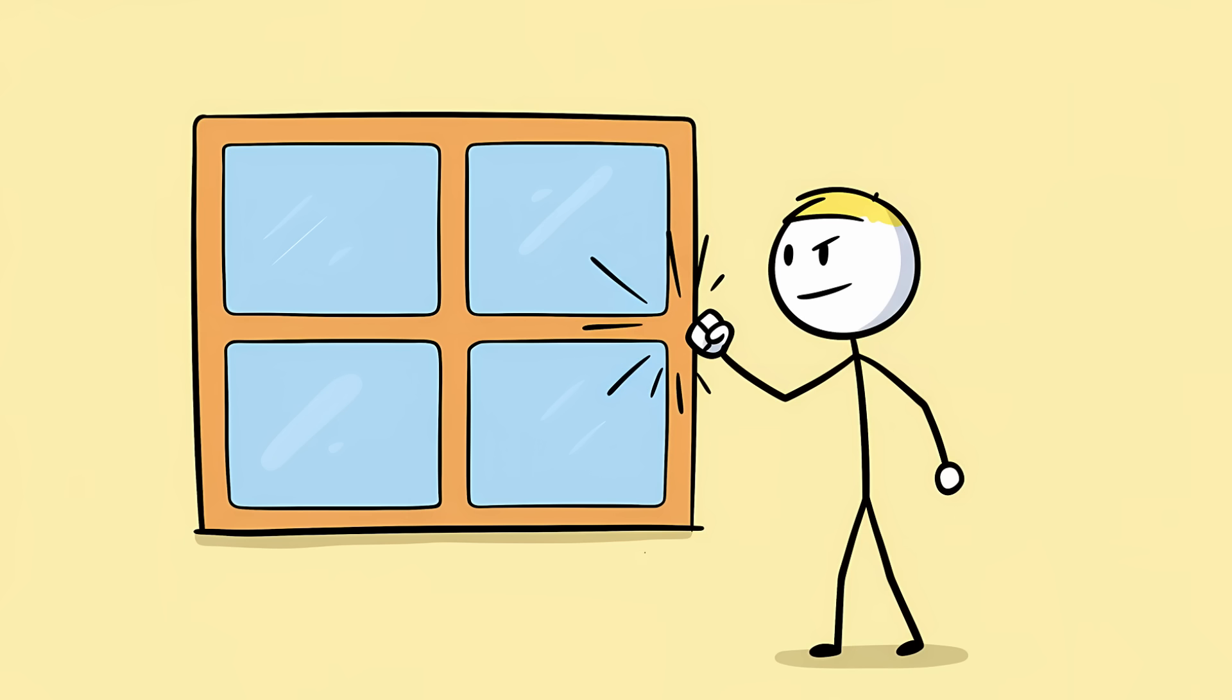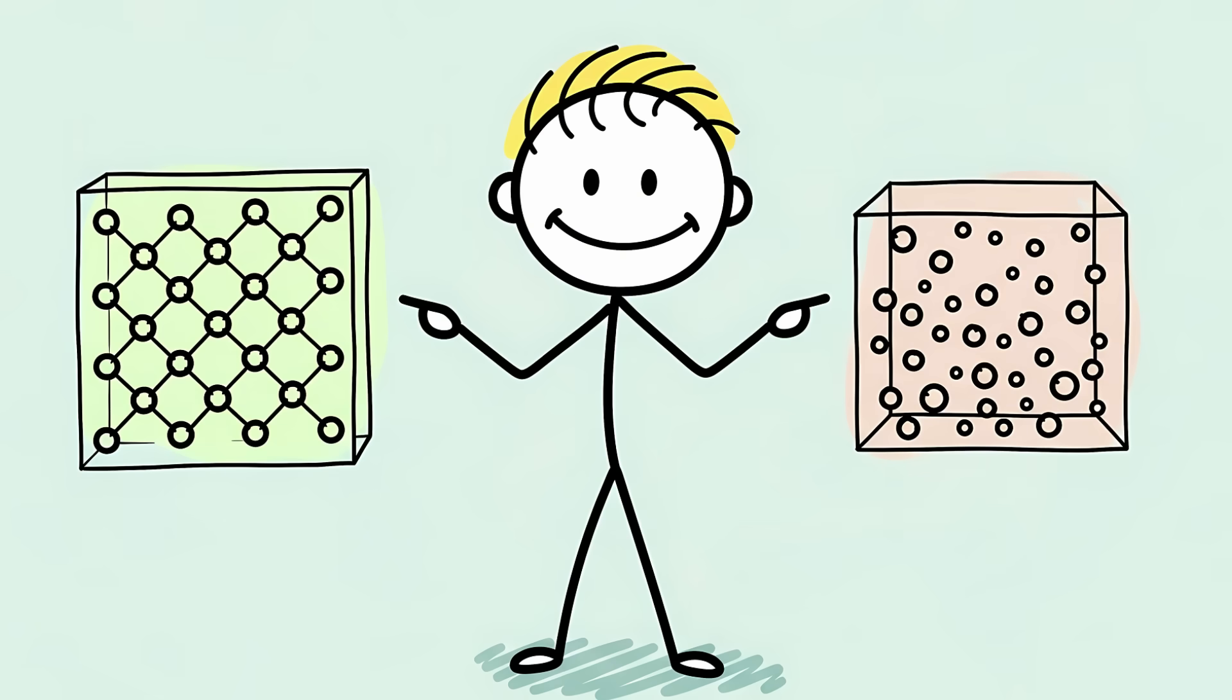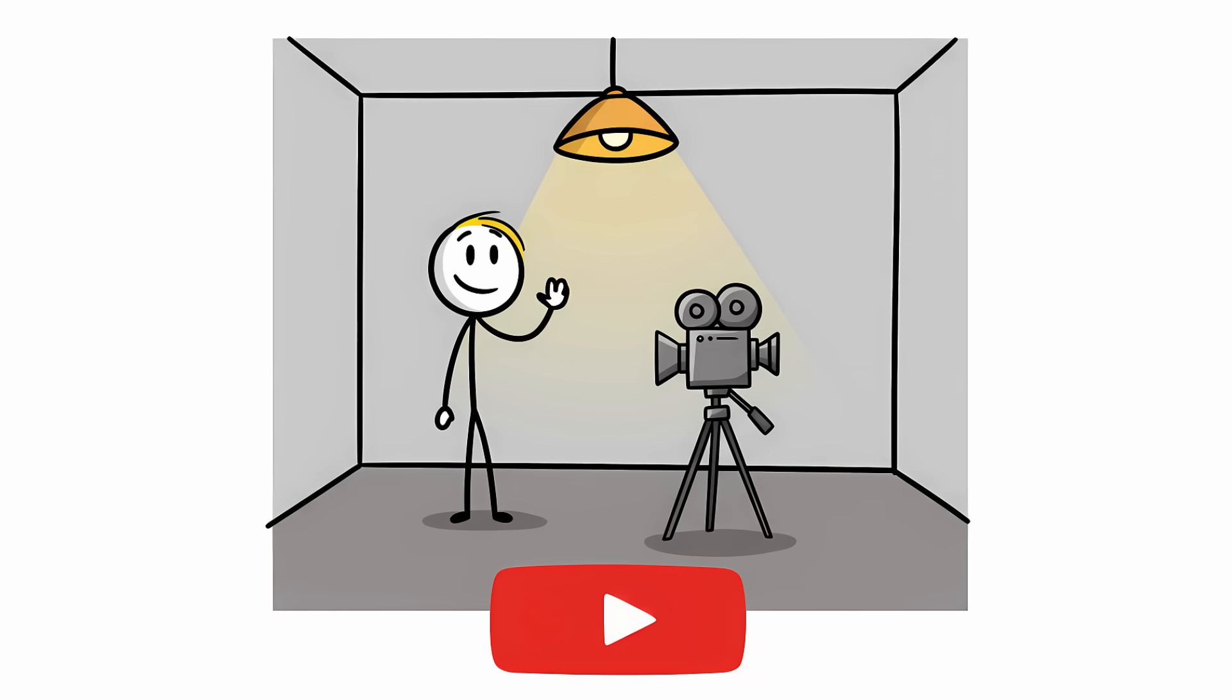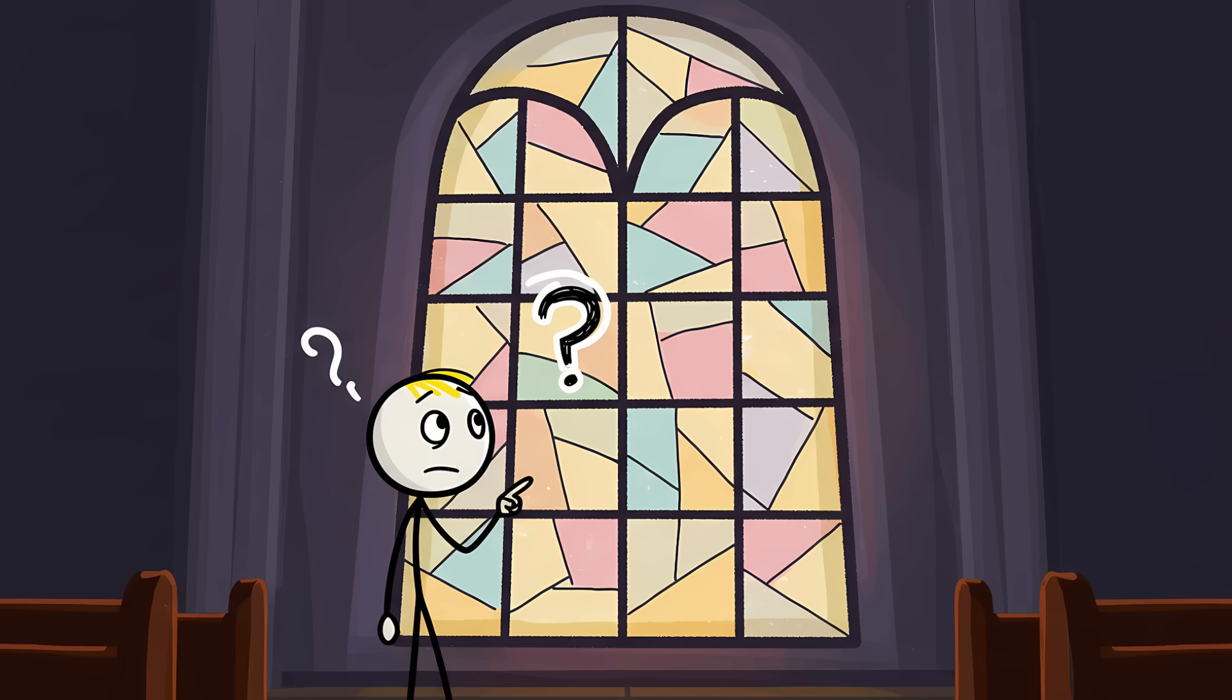It's also completely wrong. Glass is, for all practical purposes, a solid. While it's true that it's an amorphous solid, meaning its atoms aren't arranged in a neat, crystalline lattice, that doesn't make it a liquid. It doesn't flow. The calculations for how long it would take a pane of glass to flow a noticeable amount at room temperature are longer than the age of the universe.